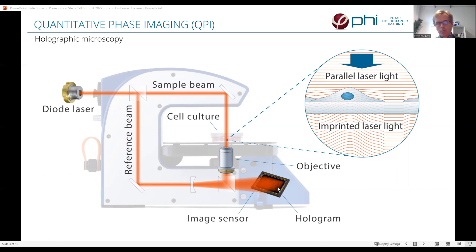And this interference pattern is the hologram. And from this hologram, it is possible to calculate the image or several images of the cells.